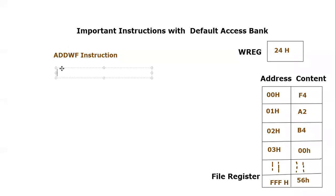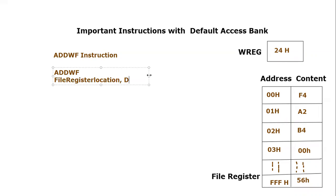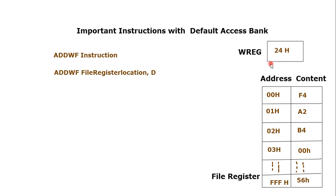First we will discuss the syntax of this command. The syntax is: ADDWF, then the file register location, then comma, then the d bit. One needs to know that ADDWF is our mnemonic, the file register location is one of the addresses we are going to add with the working register, and the d bit is very important because it indicates where the result will be stored. This d bit will dictate the destination — that is why it is also known as the destination bit. This destination can be the file register or the working register itself.